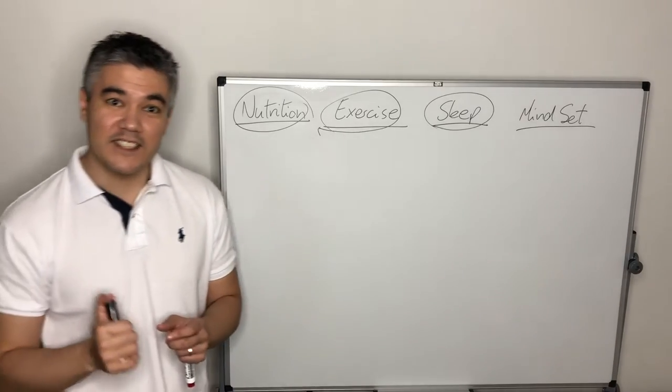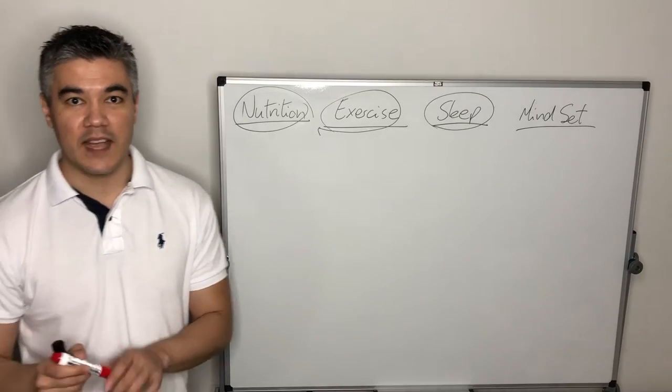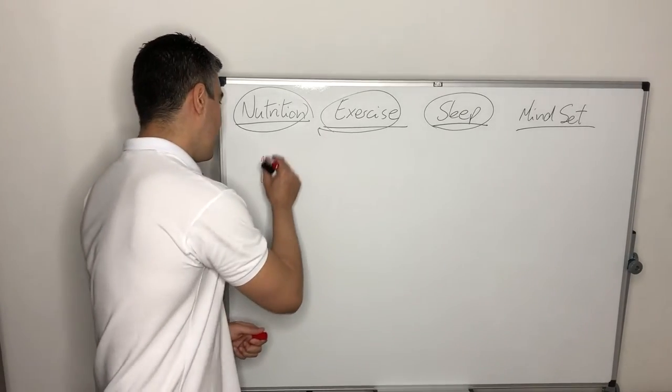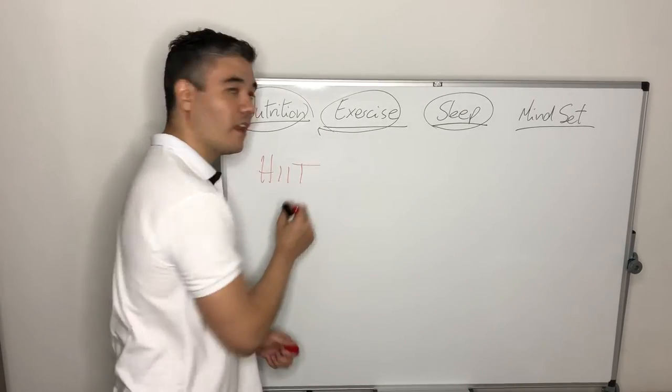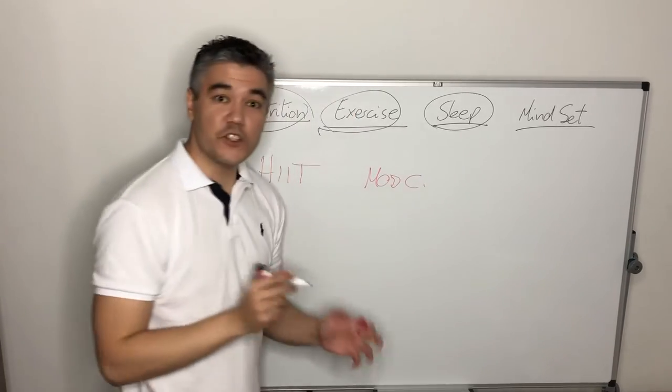When talking about exercising for weight loss, we usually think about three main types of training: HIIT, moderate cardio, and strength training.